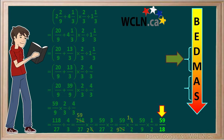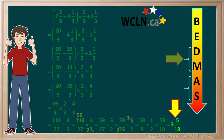59 over 18 is an improper fraction, so we can make it into a mixed number. 18 goes into 59 three times. 18 times 3 is equal to 54. The remainder is 59 minus 54, which is 5. So the final answer to our question is 3 and 5 eighteenths.